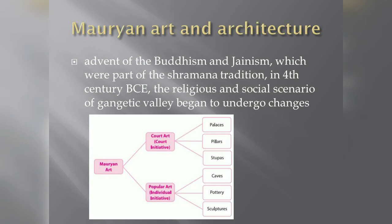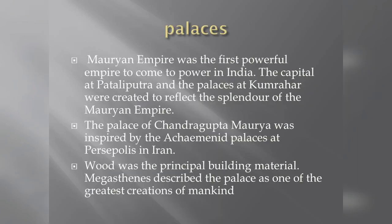The palace of Chandragupta Maurya was inspired by the Achaemenid palaces and the first palaces in Iran. These structures in Iran inspired the palace of Chandragupta Maurya.